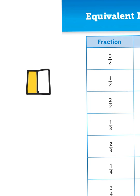Now if I were to divide that square again, I have now created four equal parts and two of those parts are shaded in. So 2 fourths is equivalent to 1 half.